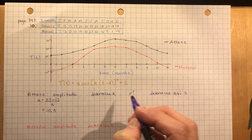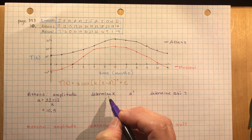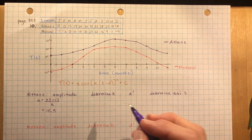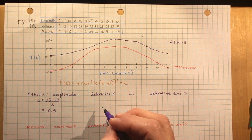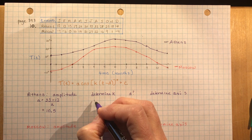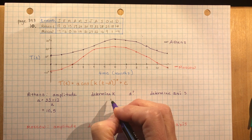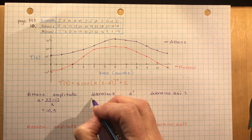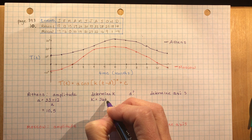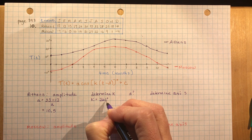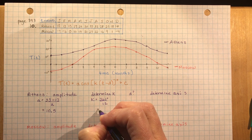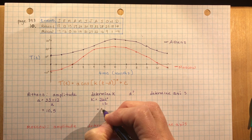To find k for Athens: we have a 12-month cycle, so the period is 12. Therefore k = 360° ÷ 12 = 30.